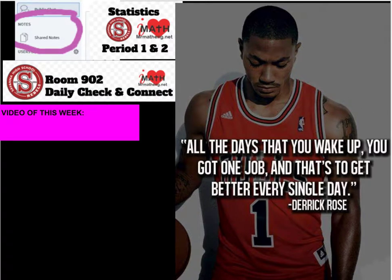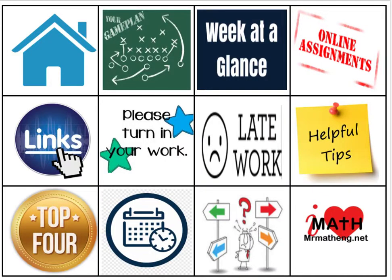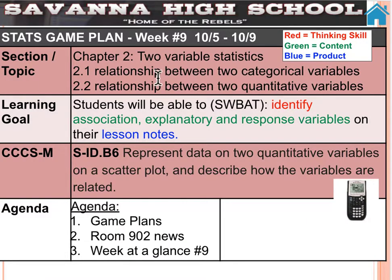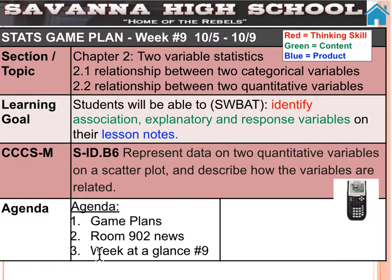Here is our grid view — you can click on those links to help you. Week number nine, October 5th to October 9th. We are starting chapter two: two-variable statistics. We're going to be doing 2.1 and 2.2. Agendas: go over the game plans, room 902 news, and then week at a glance.